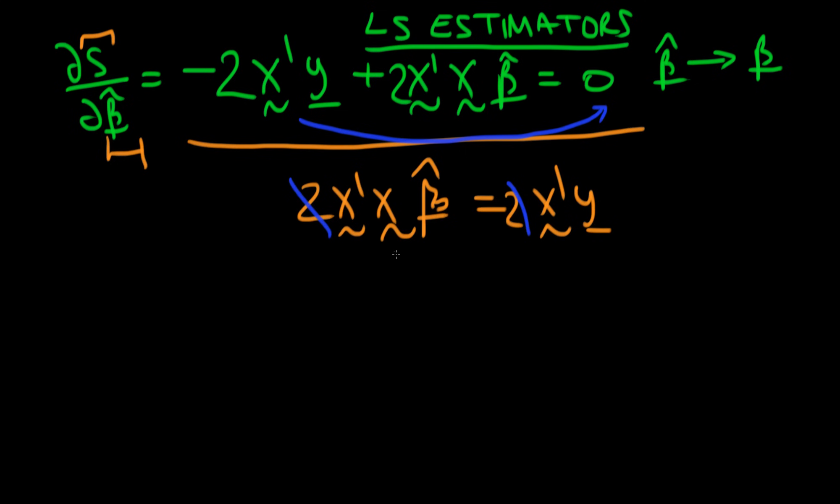Okay, so how do we get beta hat on its own now? Well, the idea is that we have to pre-multiply both sides by the inverse of X' times X.